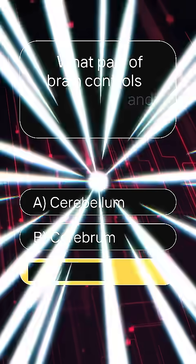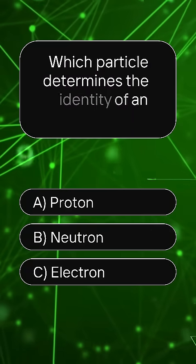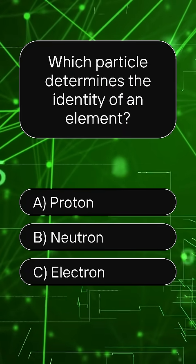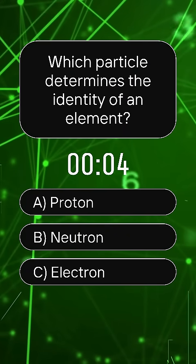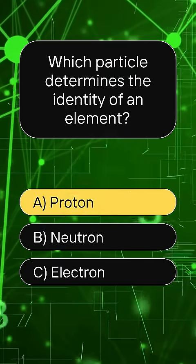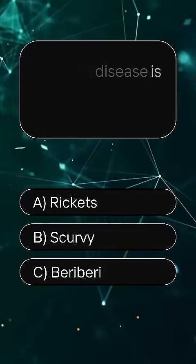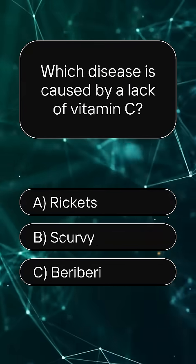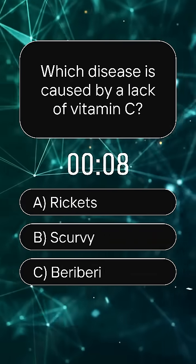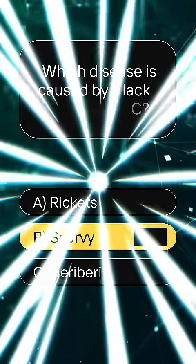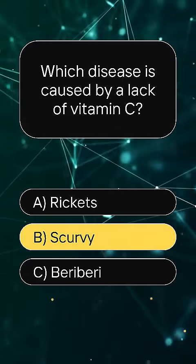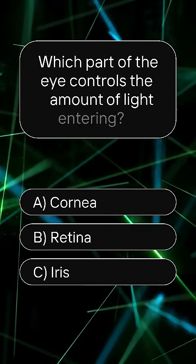Answer: C, medulla oblongata. Which particle determines the identity of an element? Answer: A, proton. Which disease is caused by a lack of vitamin C? Answer: B, scurvy.